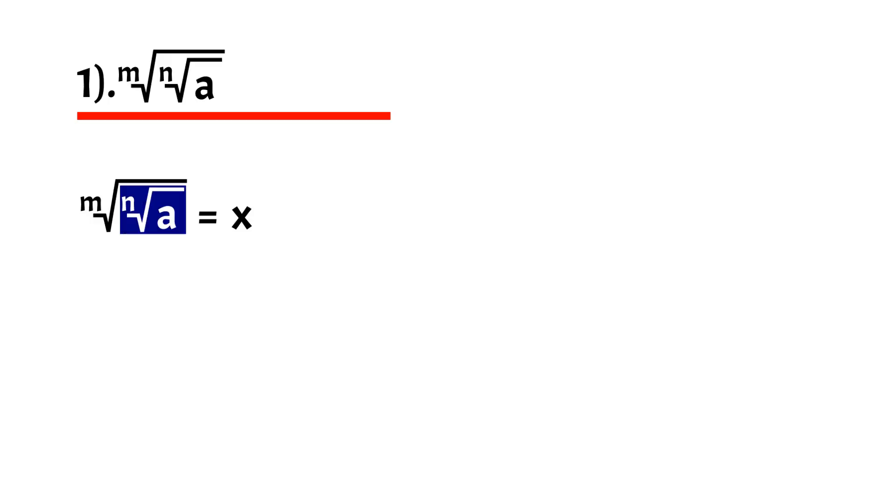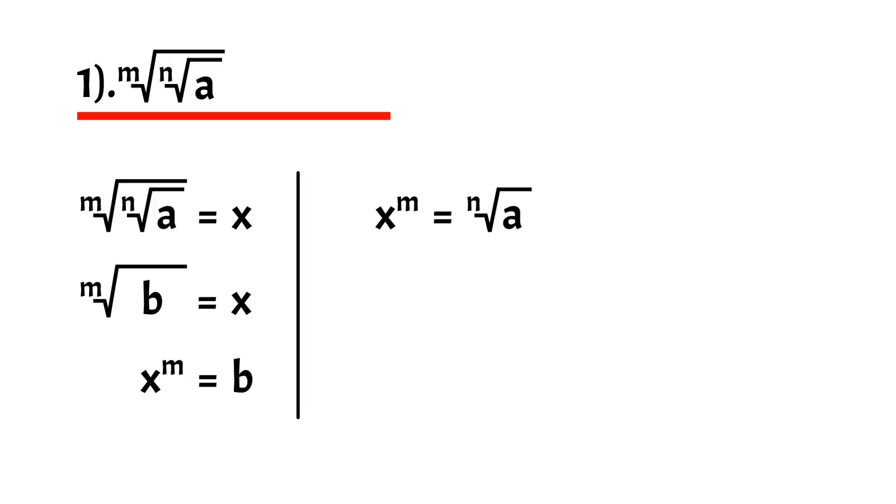Then substitute the root inside nth root of a as b. So we have nth root of b equals x, or x to the m equals b, which equals nth root of a.